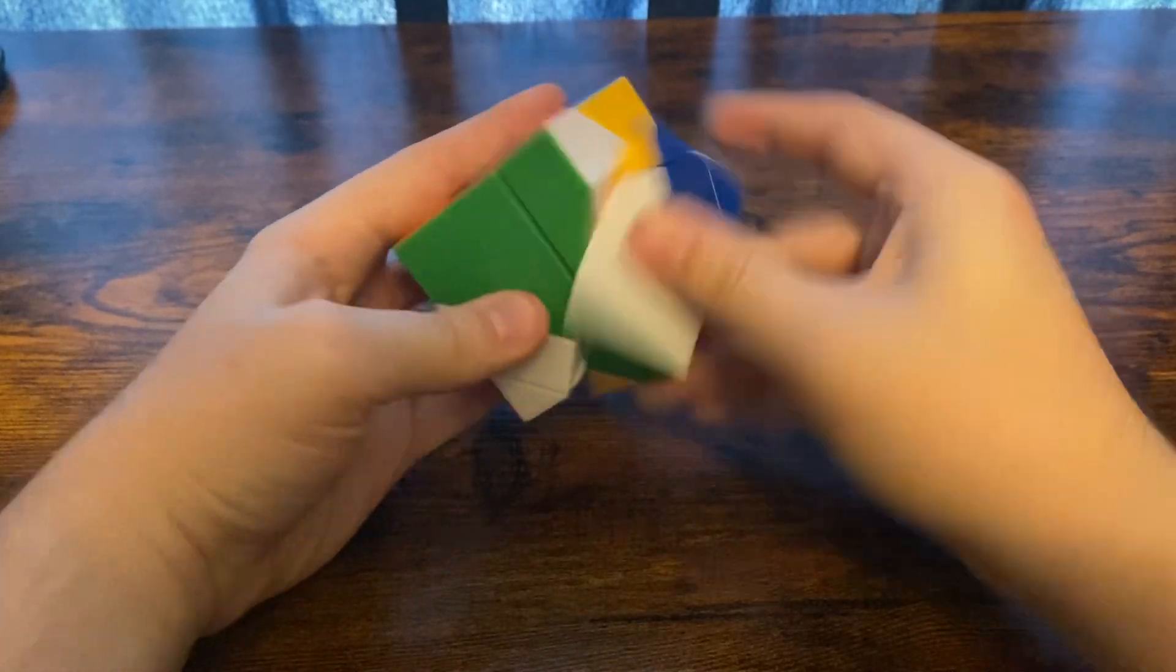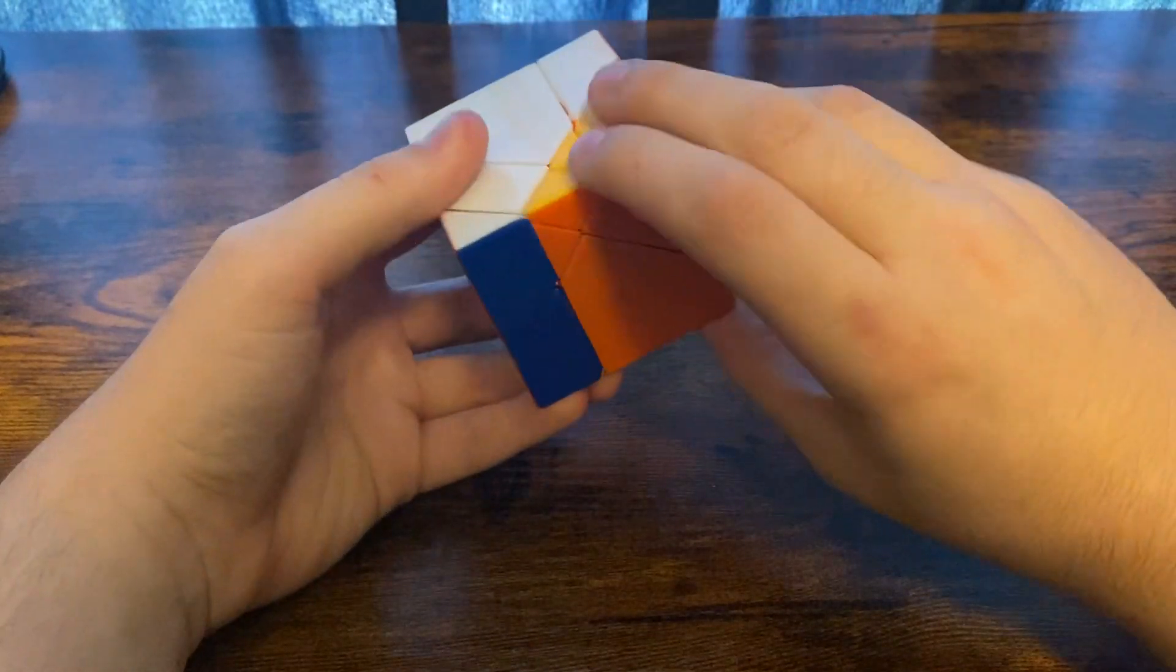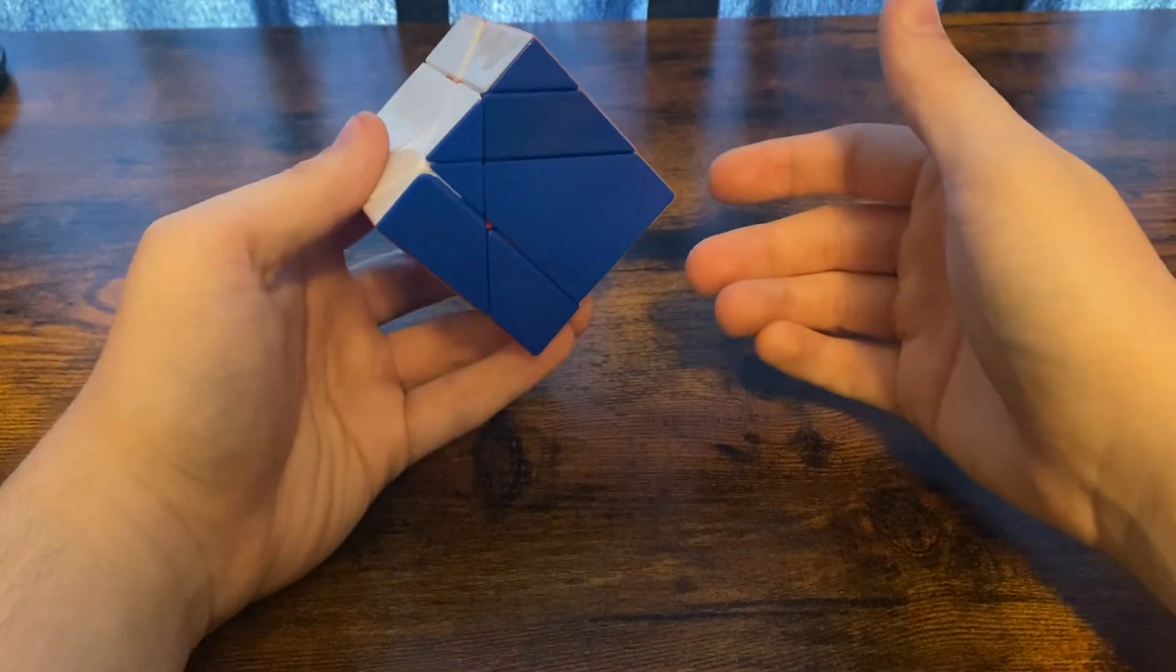We have the green white one down here. You'll want to bring it up to its green white spot, move it out of the way, and bring it back.